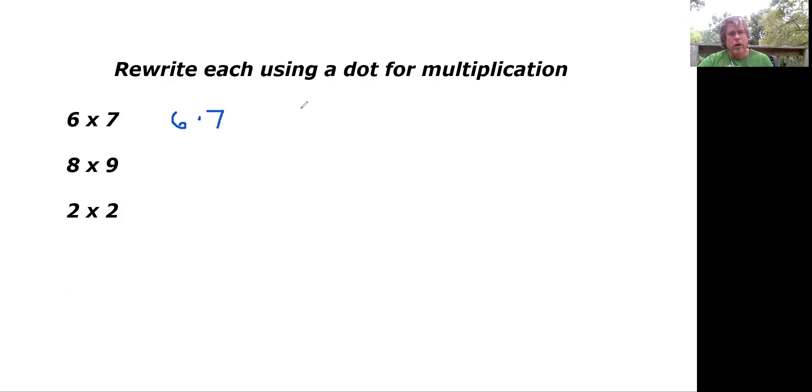Remember, on a computer or a calculator, there's not really a dot. It's more of what we call the asterisk. So it's going to be more of this symbol here on your calculator or your computer. But on paper, we typically use the dot. Six times seven.